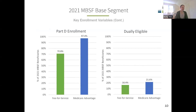There's also Part D coverage information available in the MBSF. The Medicare Advantage population has a very high rate of Part D enrollment — over 97% in 2021. Some MA plans include all three parts: A, B, and D. However, some plans only cover A and B, but there are many plans that include all three.